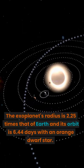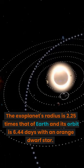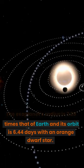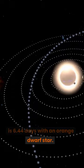The exoplanet's radius is 2.25 times that of Earth, and its orbit is 6.44 days with an orange dwarf star.